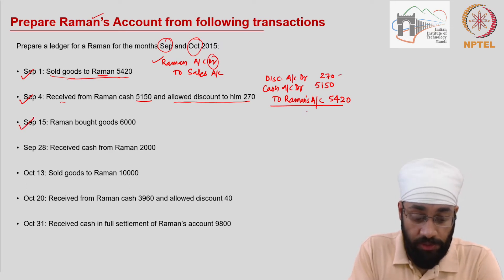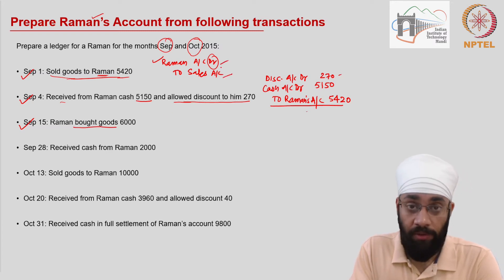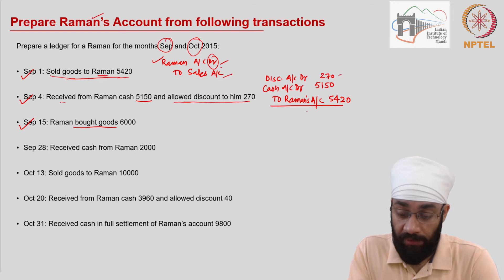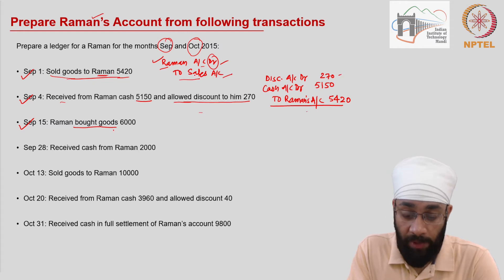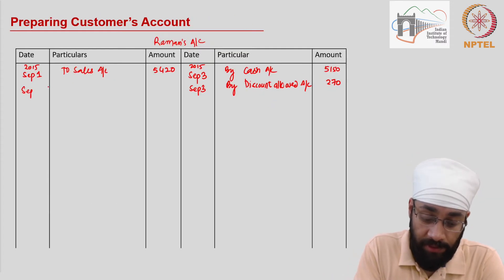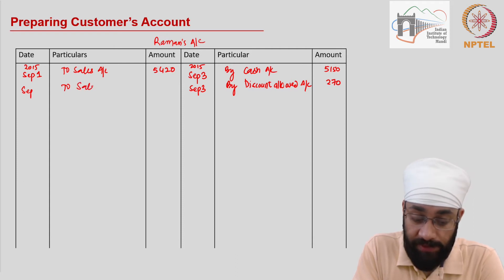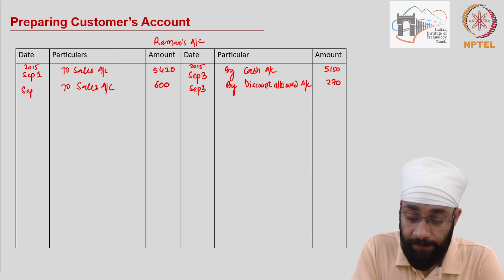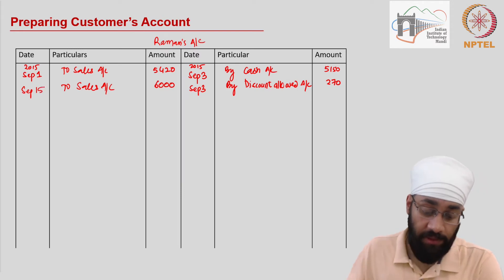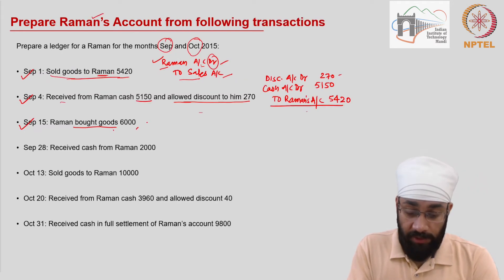The next transaction is on September 15th — Raman again bought goods from you. Writing a mental journal entry: Raman account debit to sales, same as before, but the amount is different. I go to the debit side of Raman's account and write 'To Sales Account' 6000. The date is the 15th, so I write 15 here. This transaction is done.